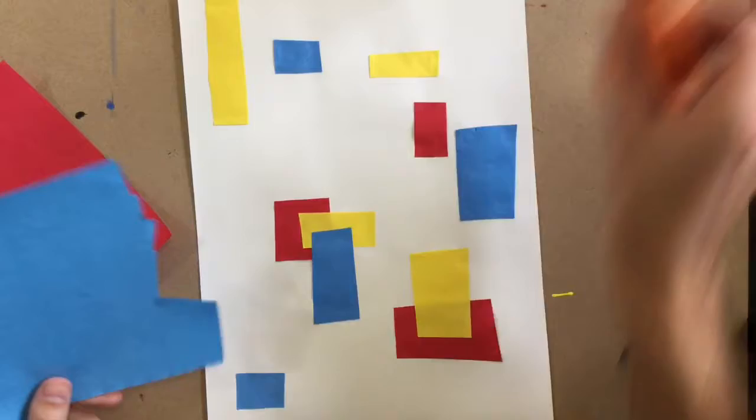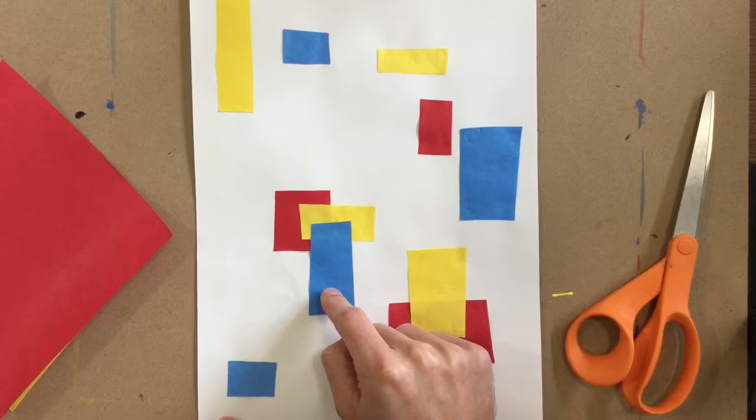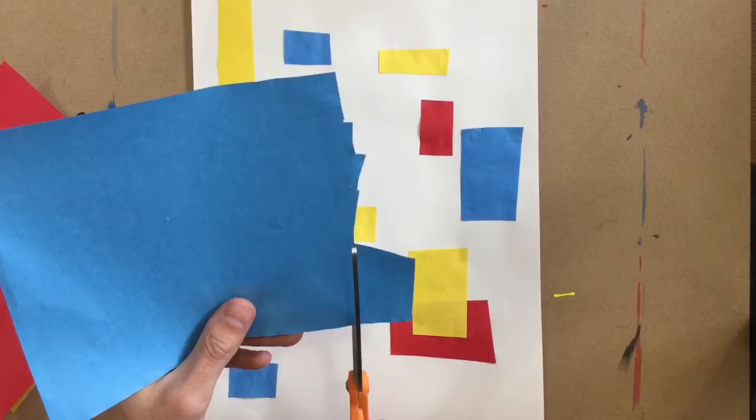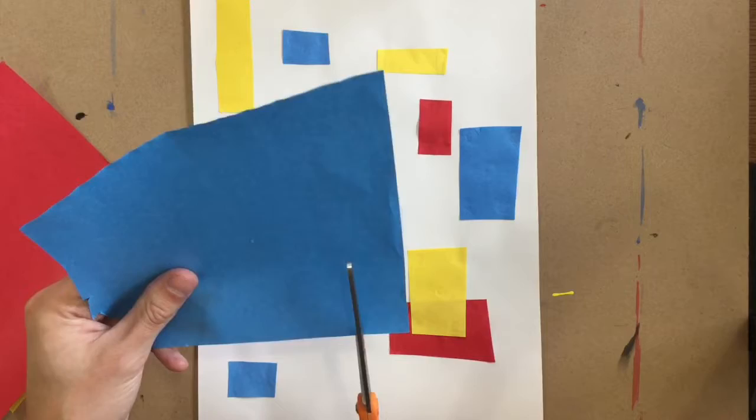We're going to continue doing what we did last class, so that means you're cutting out squares and rectangles out of the primary colors. Remember the primary colors are red, yellow, and blue. We're not cutting out circles. We're not cutting out triangles. We're cutting out squares and rectangles.